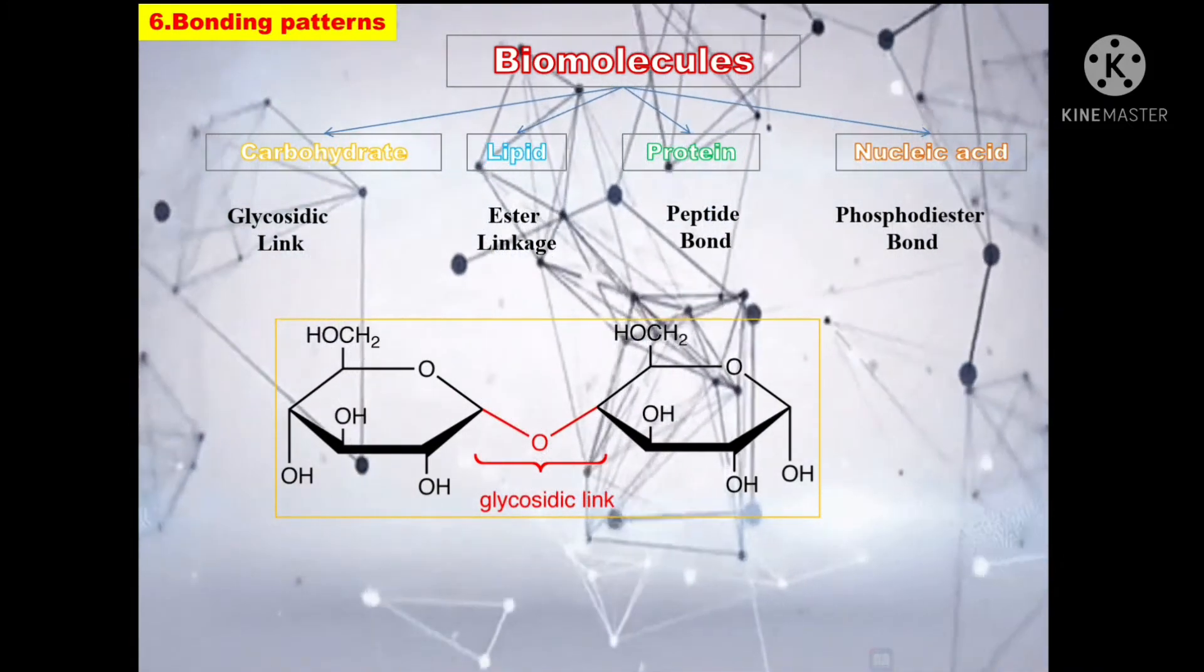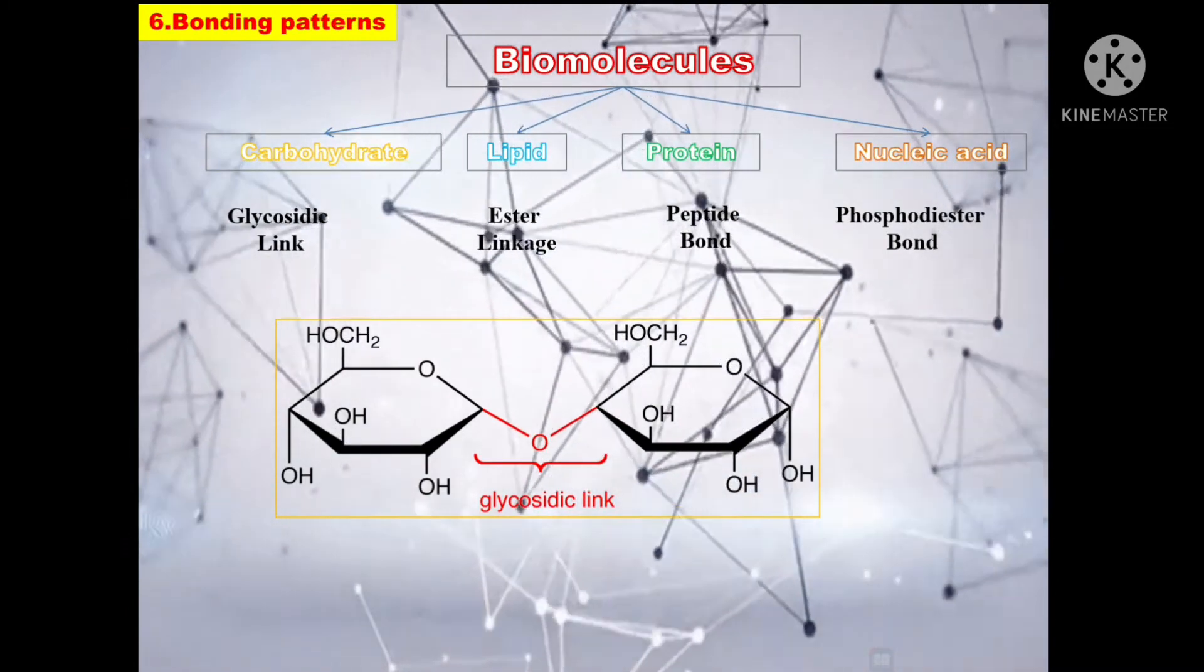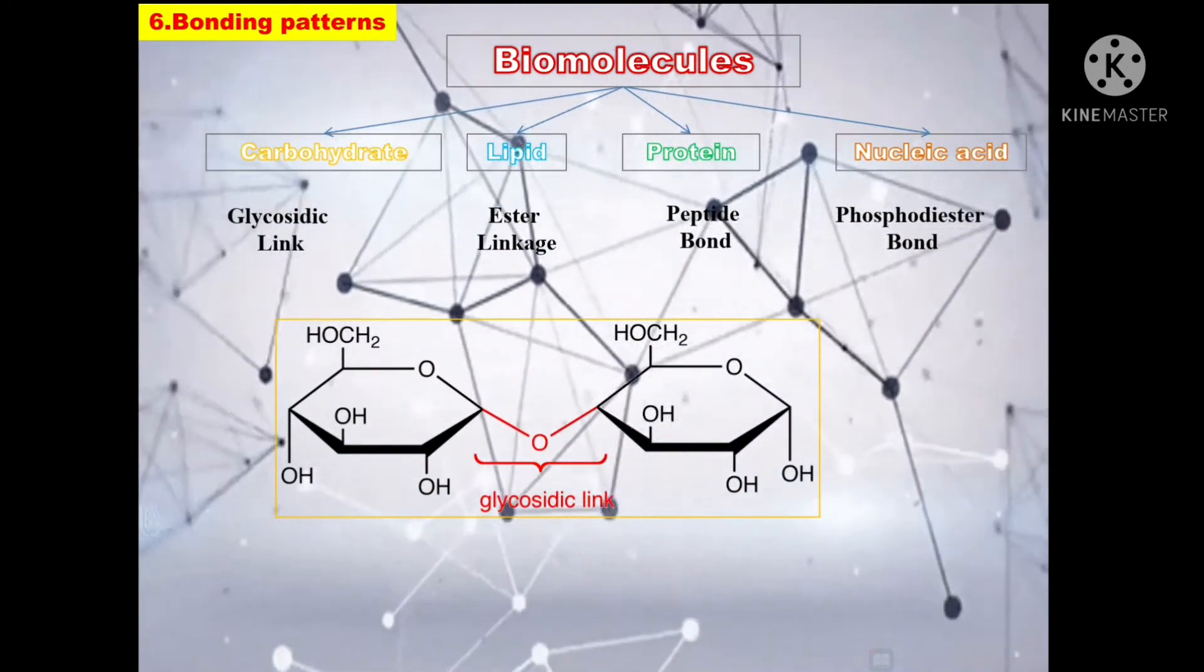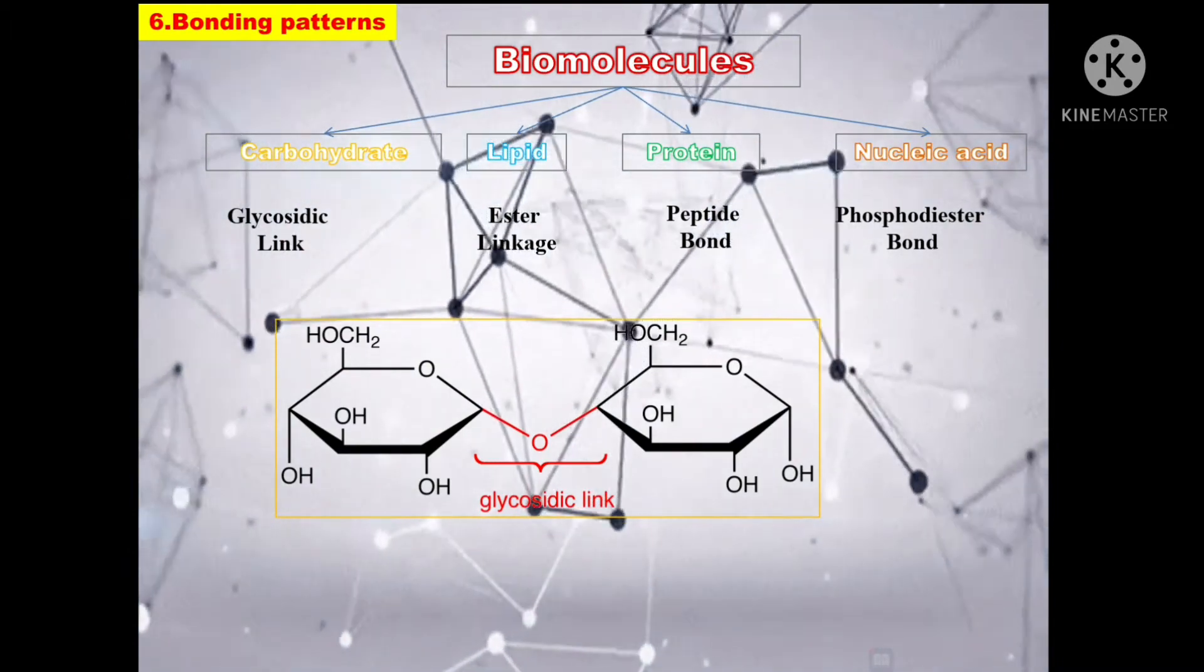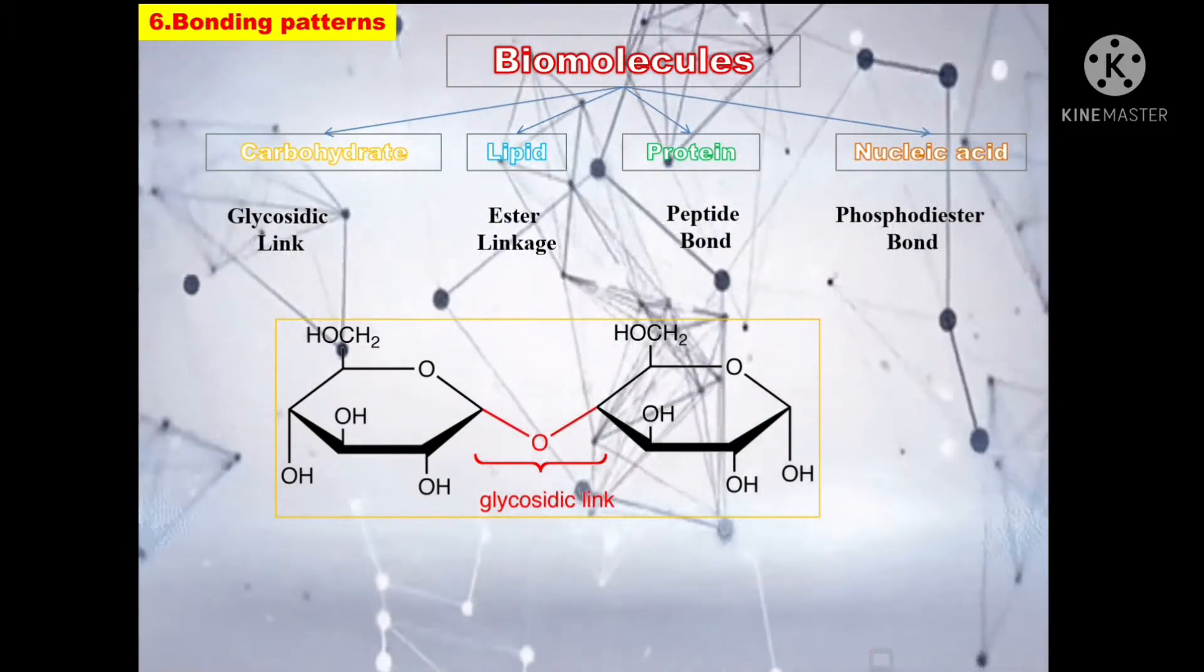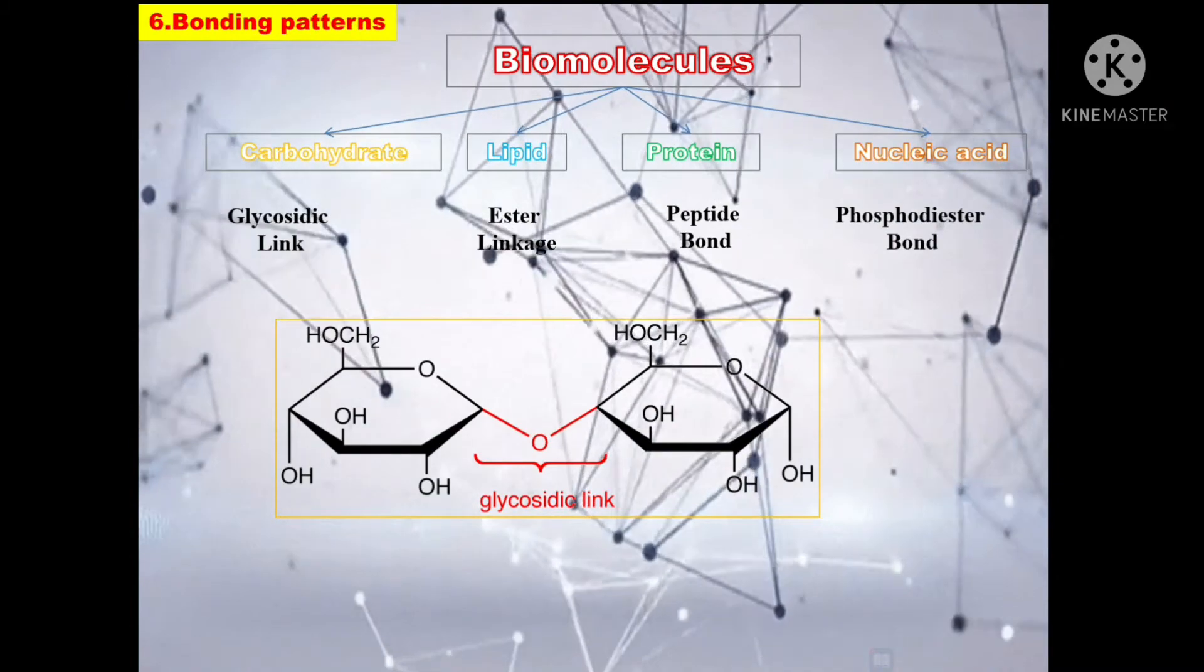The example given here is sucrose. Sucrose is a disaccharide made up of two monosaccharides and the bond between the two monosaccharides is termed as the glycosidic linkage.